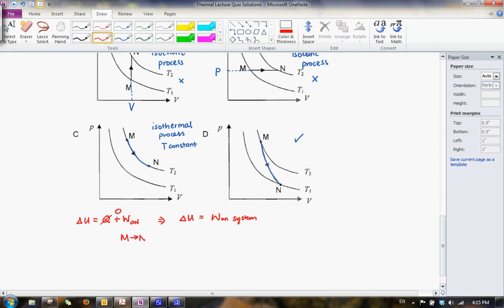So in this case, we see from M to N, what we have is that the volume actually increases. So what we have is actually positive work is done by the system. And when positive work is done by the system, what we have is negative work done on the system.